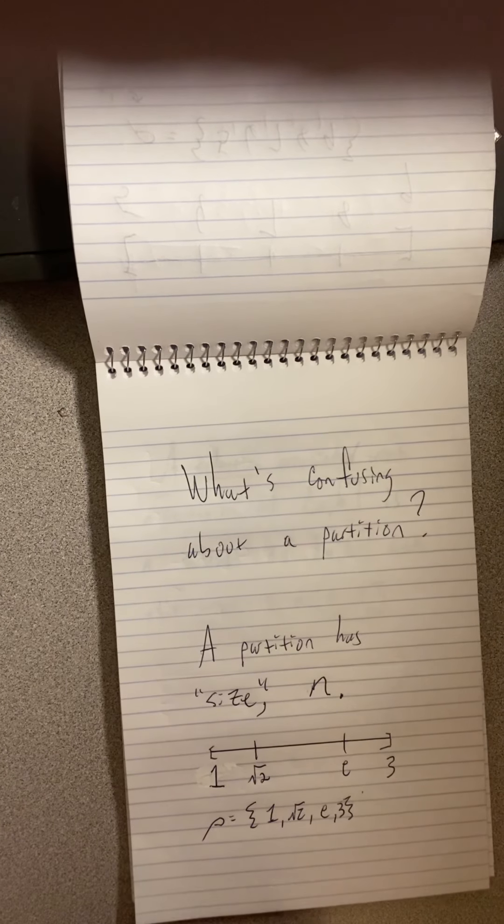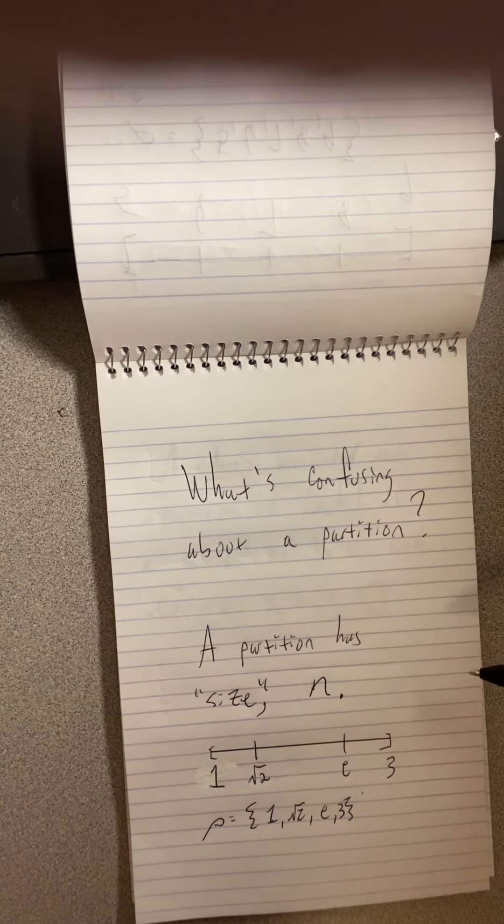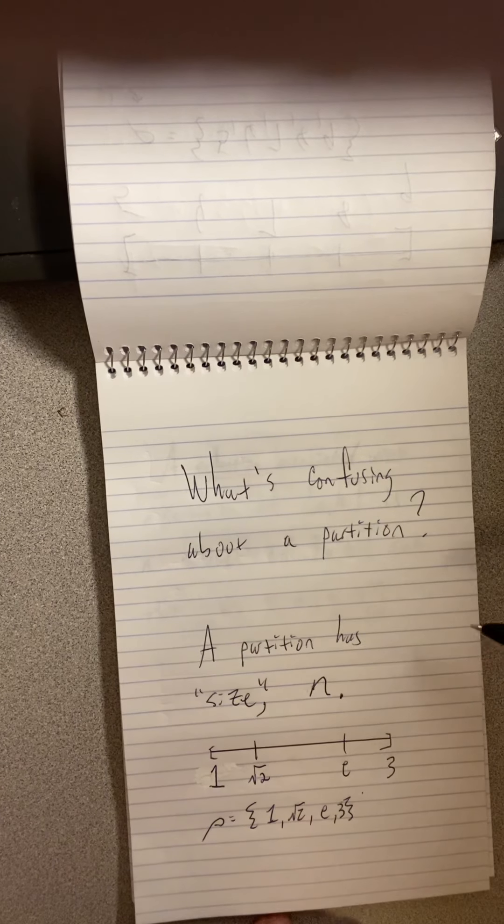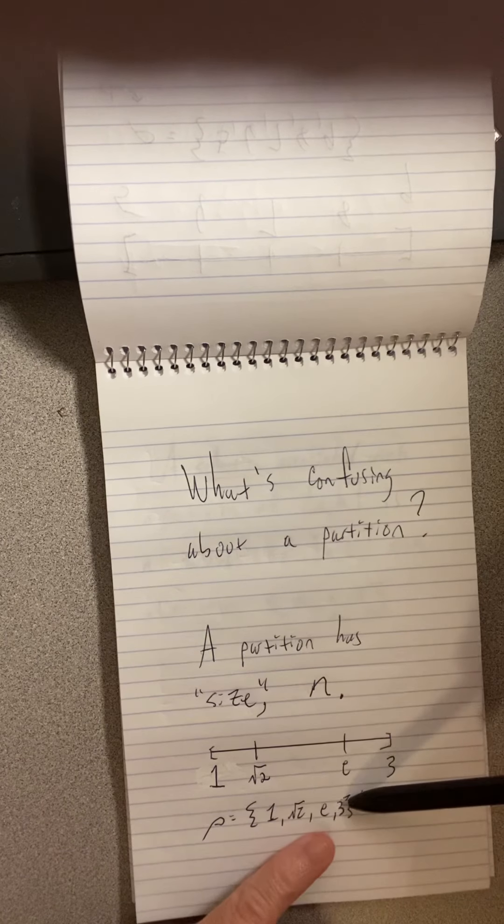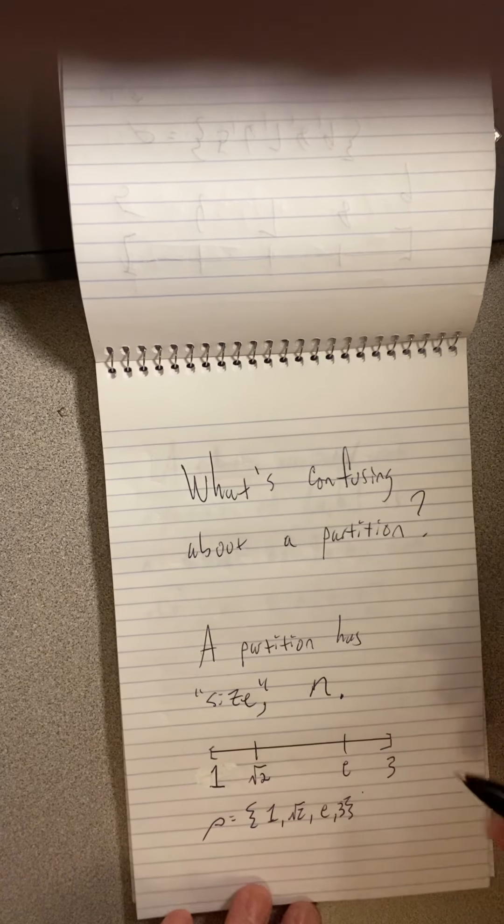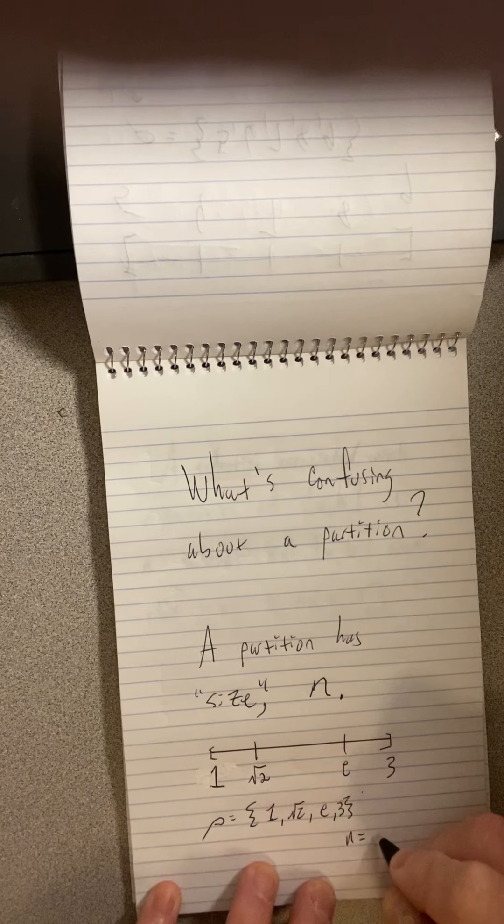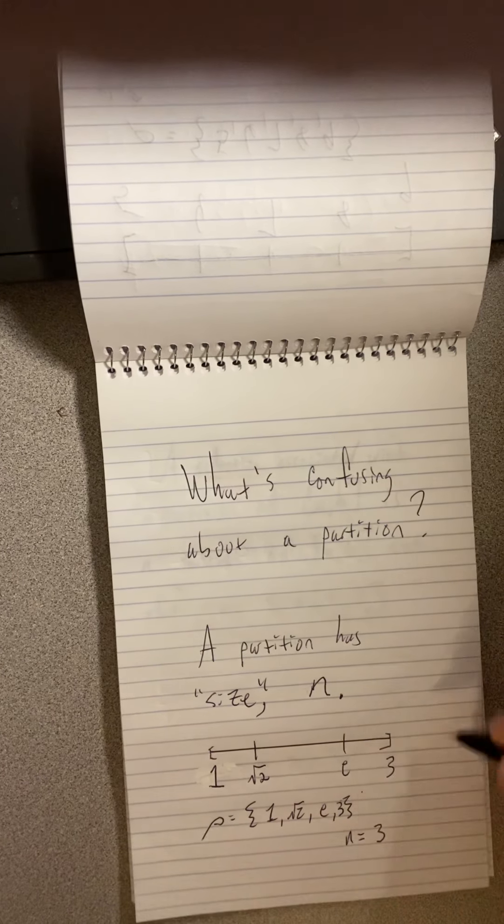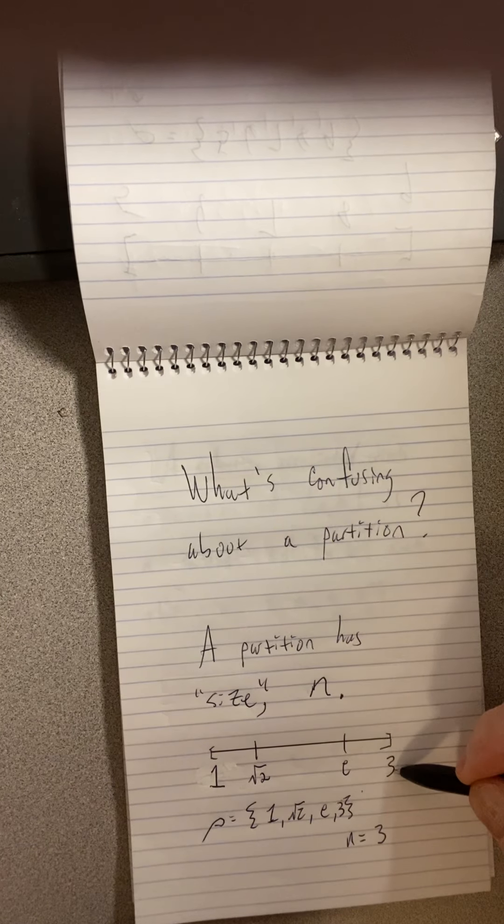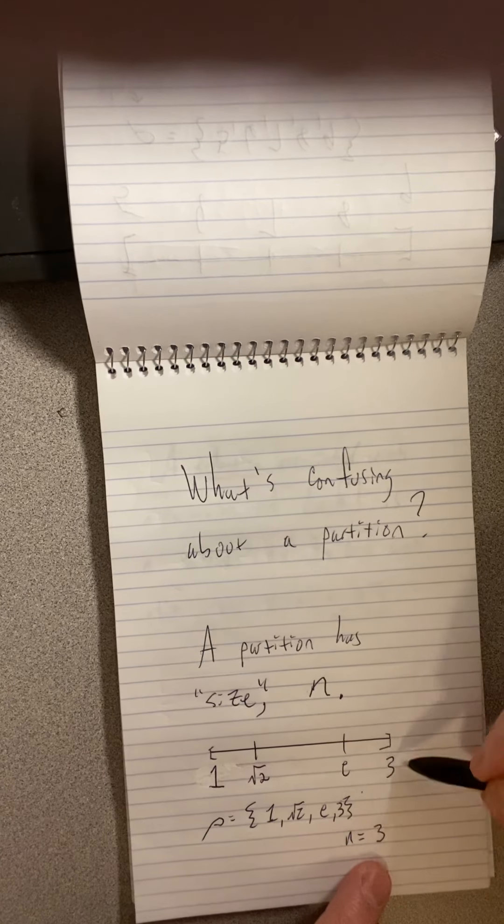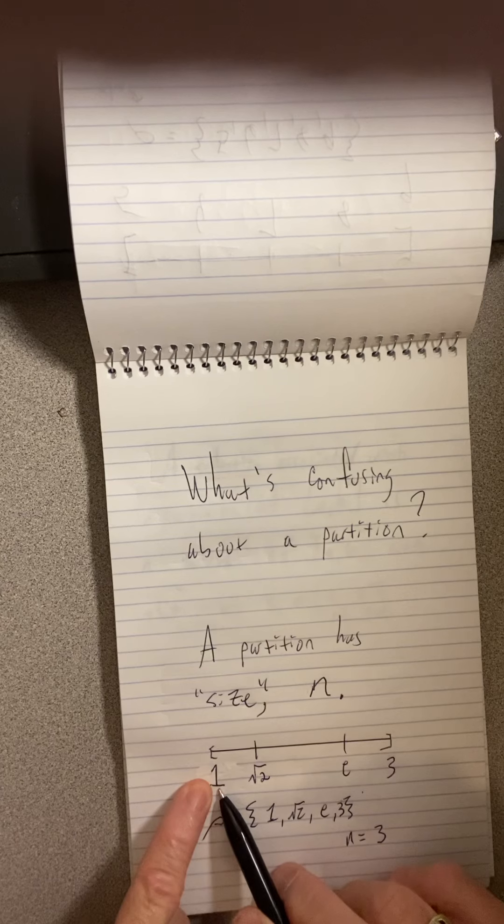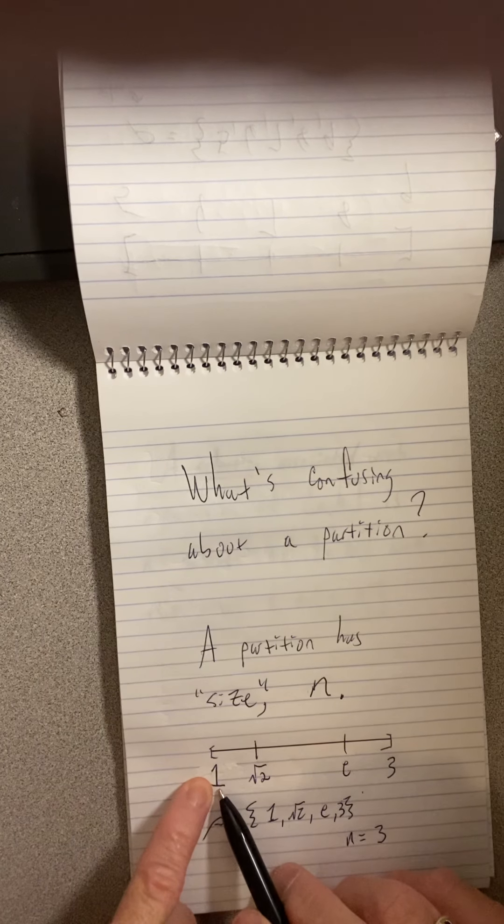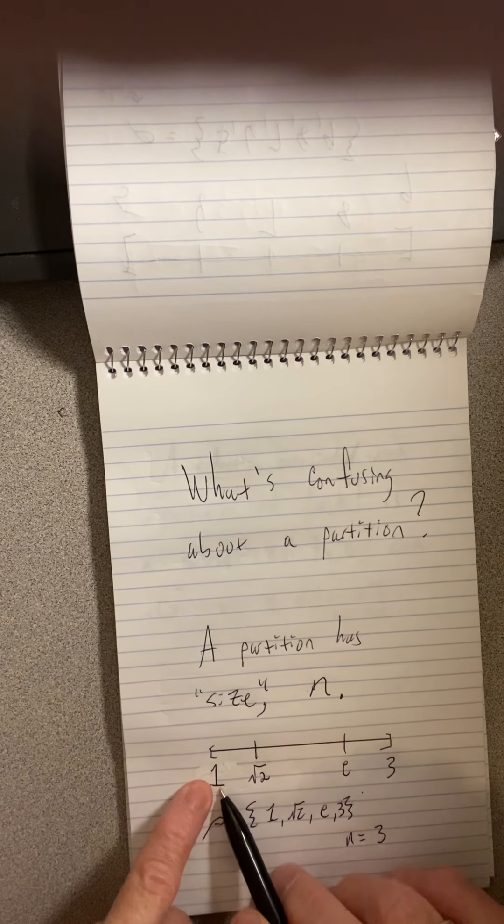So what's the size of this partition? And you'd be forgiven for saying, oh, the size is 4. I mean, there's 4 numbers in there. But no, we say the size of this partition is 3. Not because I ended at 3, that had nothing to do with it. It's because this initial chop is not counted as 1, but counted as 0.